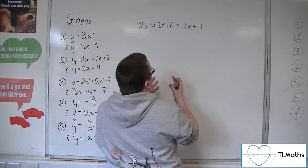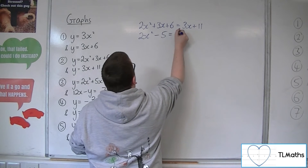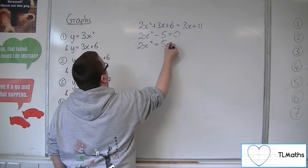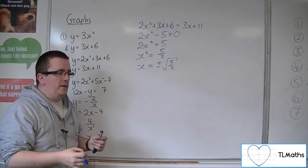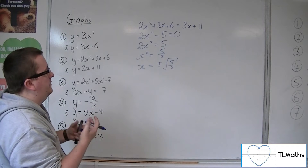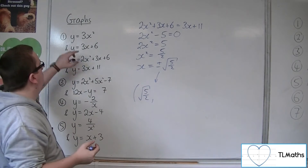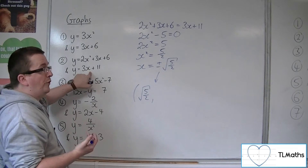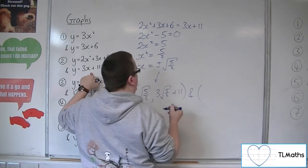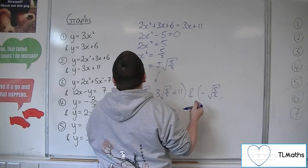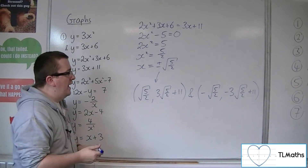Moving everything onto the left-hand side, subtracting 3x from both sides and subtracting 11 gives minus 5. Adding 5 to both sides, then dividing by 2, then square rooting gives the two x-coordinates: positive root of 5 halves and negative root of 5 halves. When x is positive root 5 halves, substituting into the second equation gives 3 lots of root 5 halves plus 11. The second coordinate uses minus root 5 halves, giving minus 3 root 5 halves plus 11.